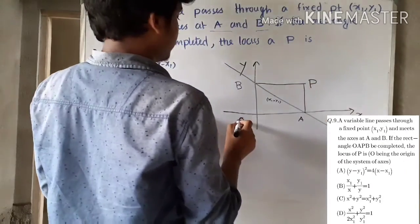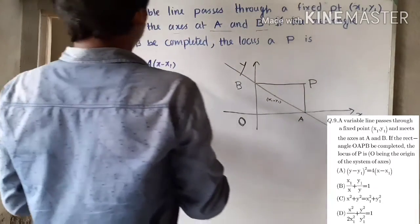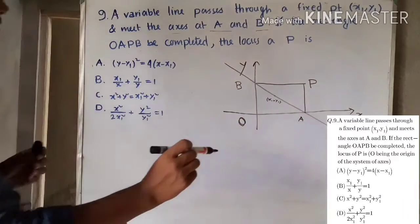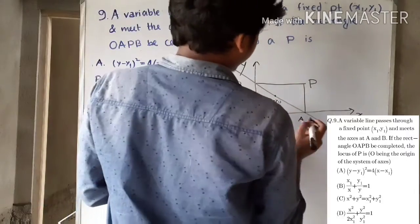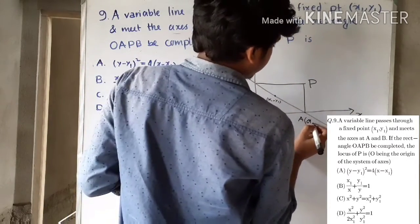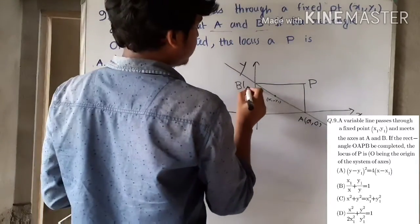Now complete the rectangle with point P here. This is the rectangle OAPB. Here the coordinates are A(a, 0) and this is (0, b).